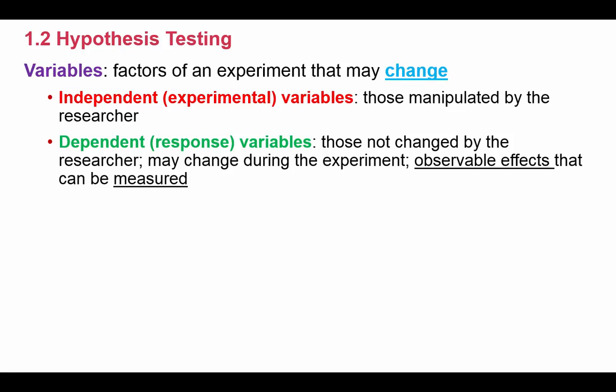The first one's called an independent variable. The second is the dependent variable. And again, I have a lot of students who get these mixed up, so you want to be very clear here. So the independent variables are those variables or those factors that are manipulated by the researcher. Another way of putting it is that independent variables, they're the thing that you're testing.